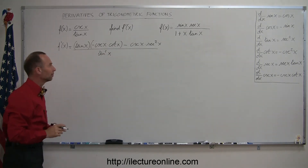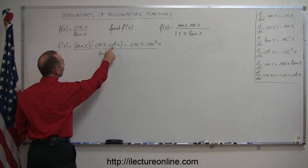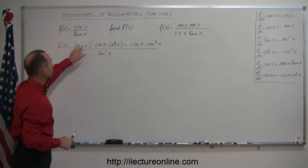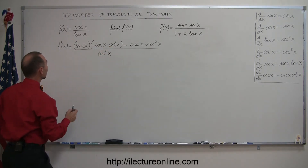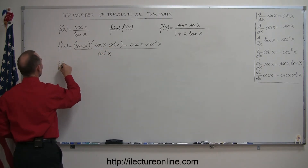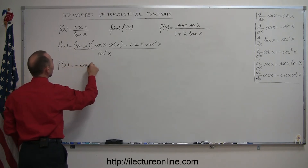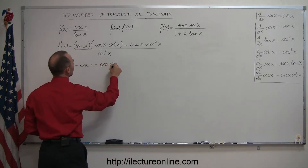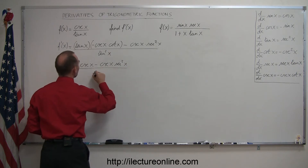Notice that we have the product of tangent of x times cotangent of x, and that's equal to 1, because tangent is sine over cosine and cotangent is cosine over sine. Multiplied together, that becomes 1. So f prime of x is equal to minus cosecant of x minus cosecant of x times secant squared of x.